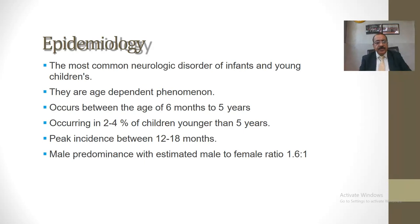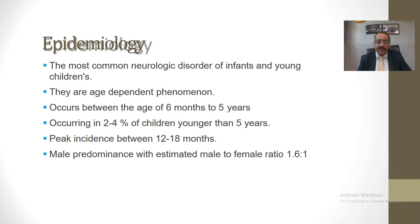Regarding the epidemiology of febrile seizures, they are the most common neurologic disorder of infants and young children. Febrile seizures are age-dependent phenomena occurring between 6 months and 6 years of age, and they occur in about 2 to 4 percent of children younger than 5 years. The peak incidence is between 12 to 18 months of age, with a slight male predominance and an estimated male-to-female ratio of 1.6 to 1.